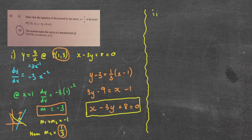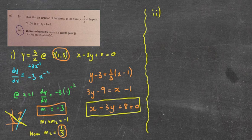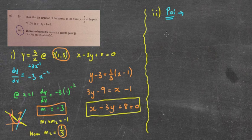The question asks: the normal meets the curve at a second point Q — find the coordinates of Q. You can see that my normal, perpendicular to the tangent, is going to hit the parabola at another spot. We know it already hits at x equals 1, so we need to find that other point. This question is talking about the point of intersection. When you hear point of intersection, you should think of simultaneous equations.